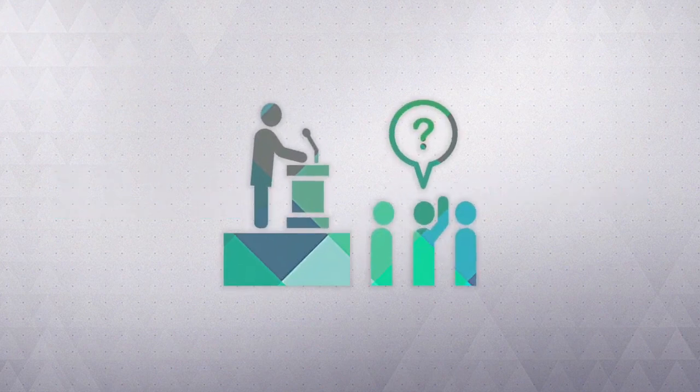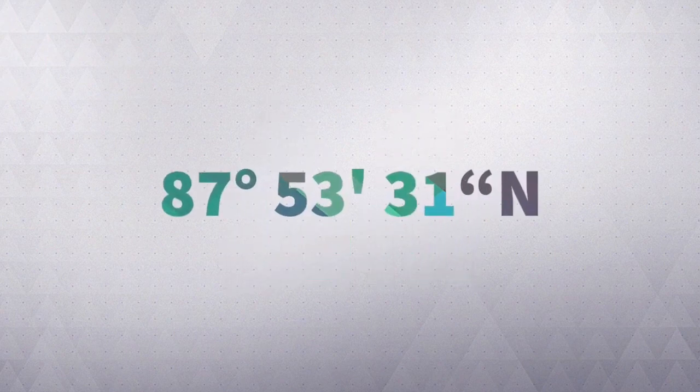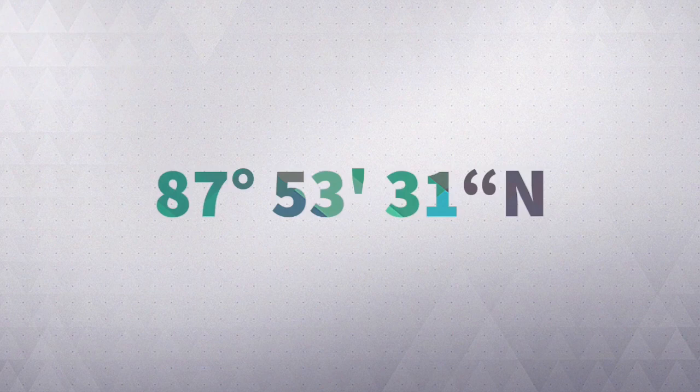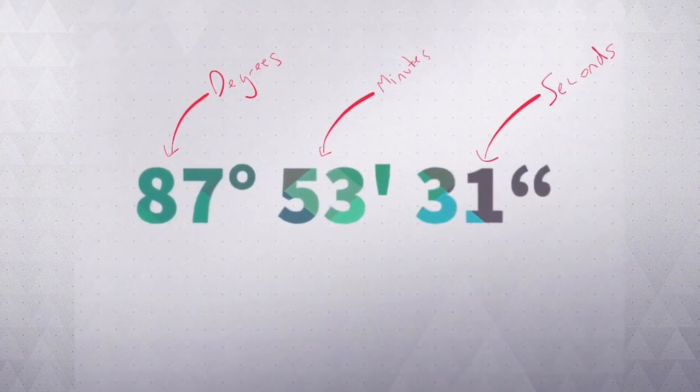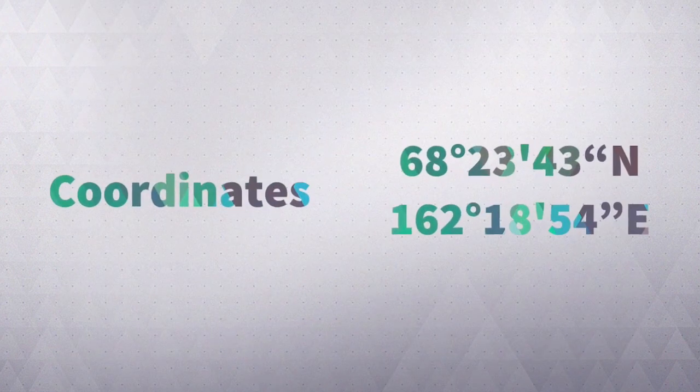Can you give us an example? Seriously, mate. Put your hand down. I'm getting to it. So if we were given the coordinates 87 degrees, 53 minutes and 31 seconds north, we have degrees first, followed by minutes and then seconds.